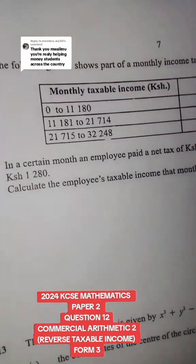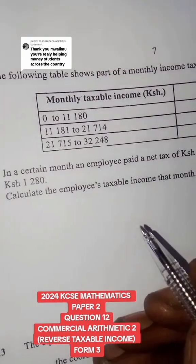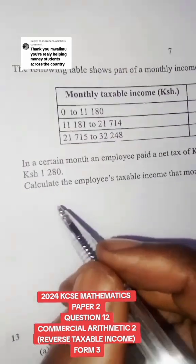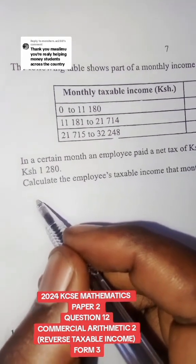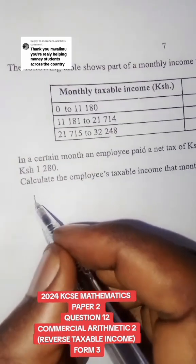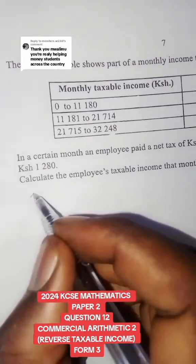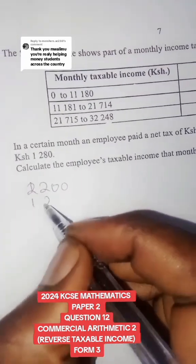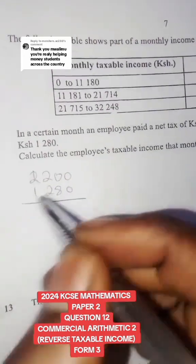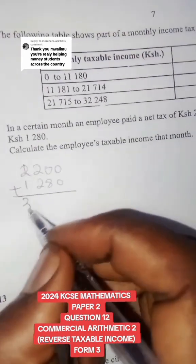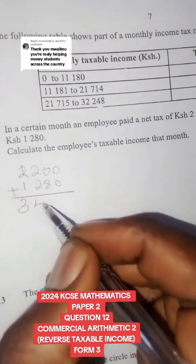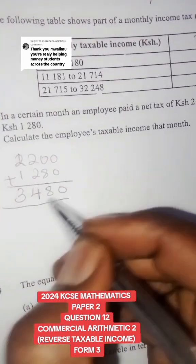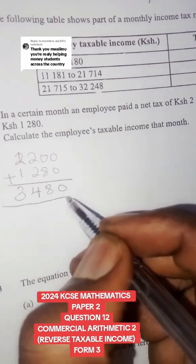Let us first find the total tax that was incurred. We are going to take the net tax, which is 2,200, plus 1,880. This gives me 3,480, and this is the tax that the person incurred.